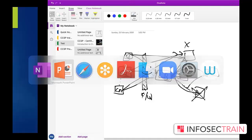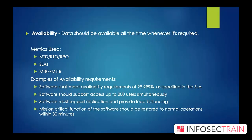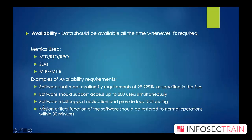Mission-critical functions of software should be restored to normal operations within 30 minutes — though for critical systems like Amazon, recovery might need to happen within one or two minutes. This is where MTD and RTO come in: for critical systems, the recovery time objective should be less than 30 minutes. These are the common requirements from confidentiality, integrity, and availability. Let's take a quick pause for any questions.